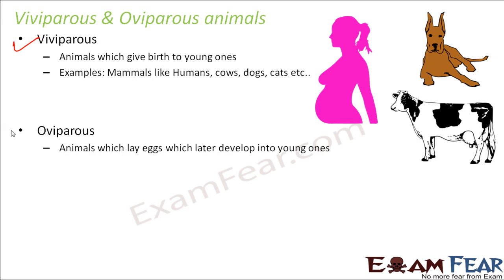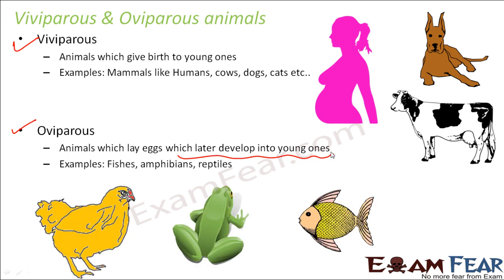Oviparous animals are those which lay eggs, which later develop into young ones. The development doesn't take place inside the mother's body — it takes place outside. Eggs are formed, released outside, and from those eggs new organisms are formed. Examples of oviparous animals are fishes, amphibians like frogs, reptiles, and hens.